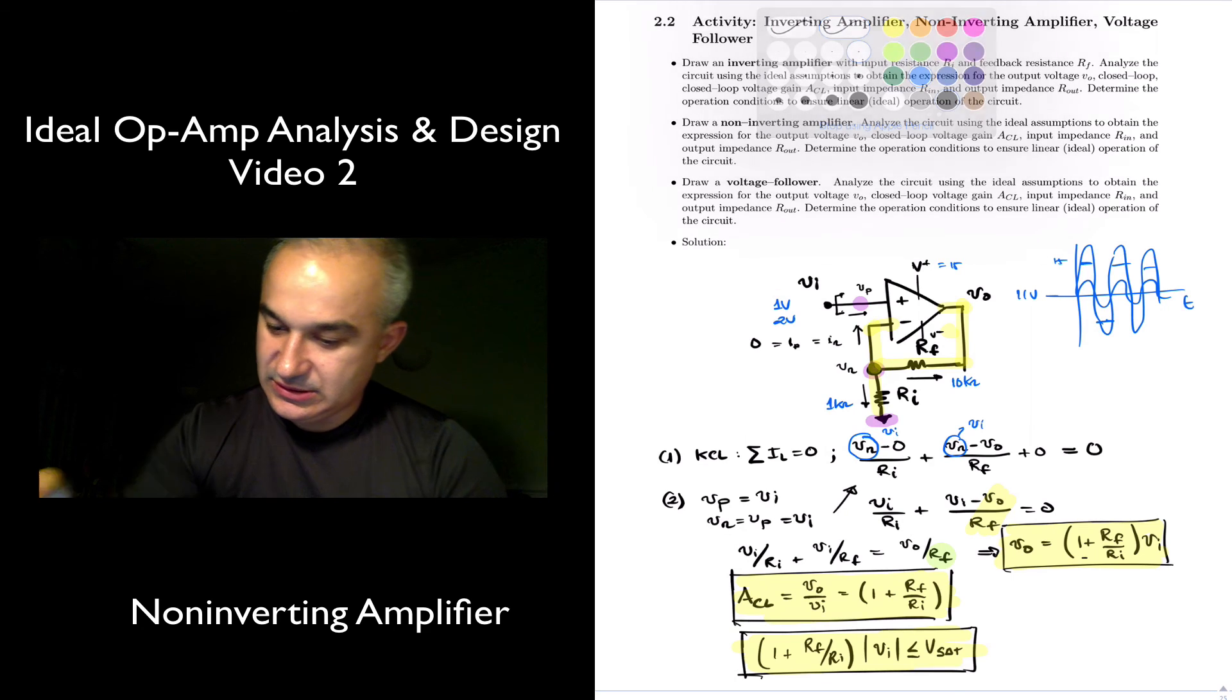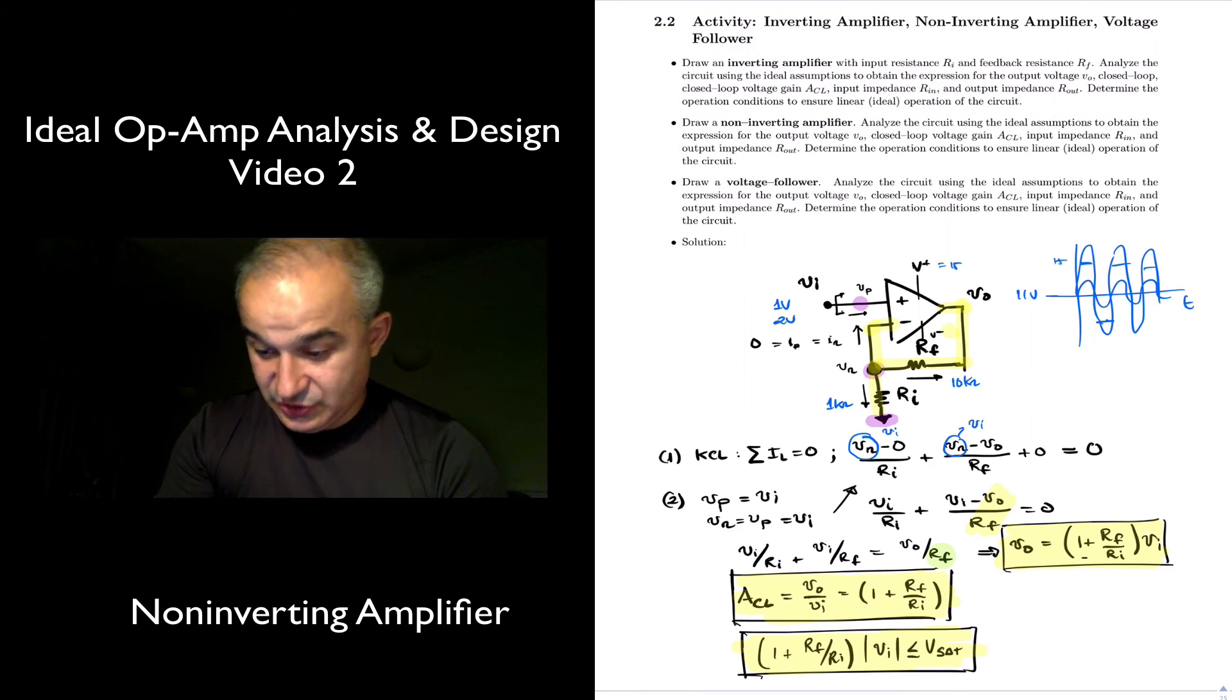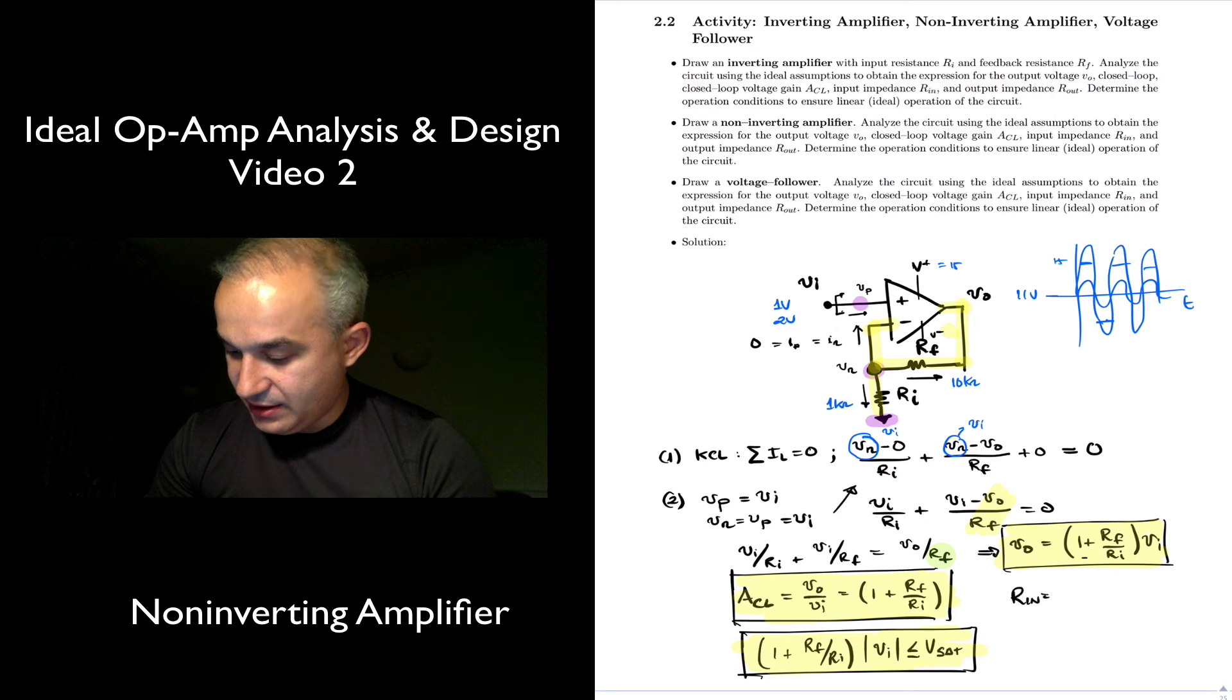Okay, input impedance. In this case, the input impedance, you can see that it's going to the amplifier. So if I put here a source, Rin is equal to Vin divided by my input current Ip. But Ip is 0. Therefore, the input impedance is infinity. In reality, what is going to be the input impedance of this circuit? The input impedance of the operational amplifier that you are using, which comes in the datasheet, like 10 to the 6 or whatever.